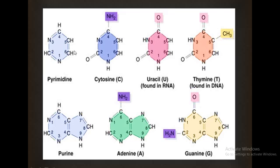Looking at the general structure of pyrimidines: at carbon two there is a double bond oxygen. If you have a carbon four amino group, you get cytosine. If you have oxygen, you get uracil. If you have oxygen plus a methyl group, you get thymine. Uracil is not present in DNA, while thymine is only found in DNA and not in RNA.